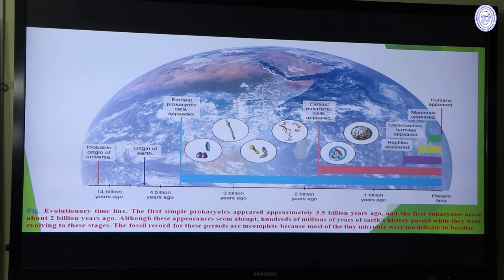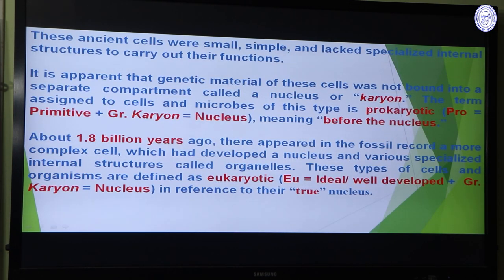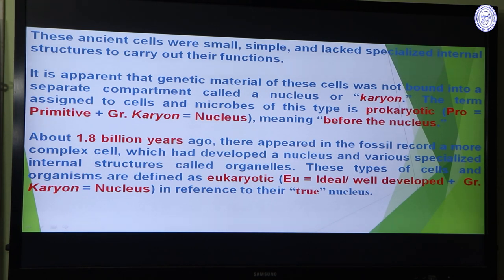This is the life history of living organisms from the primitive world to the present world. These ancient cells were small, simple, and lacked specialized internal structures to carry out their functions. The genetic material of these cells was not bound into a separate component called nucleus — 'karyon' in Greek. The term assigned to cells and microbes of this type is prokaryotic: 'pro' means primitive and 'karyon' means nucleus, meaning it is a cell before the origin of a nucleus.